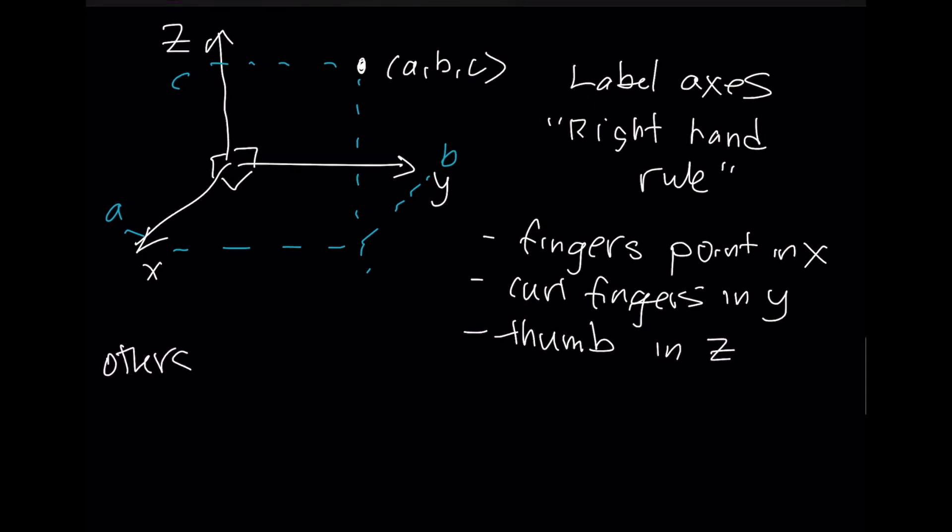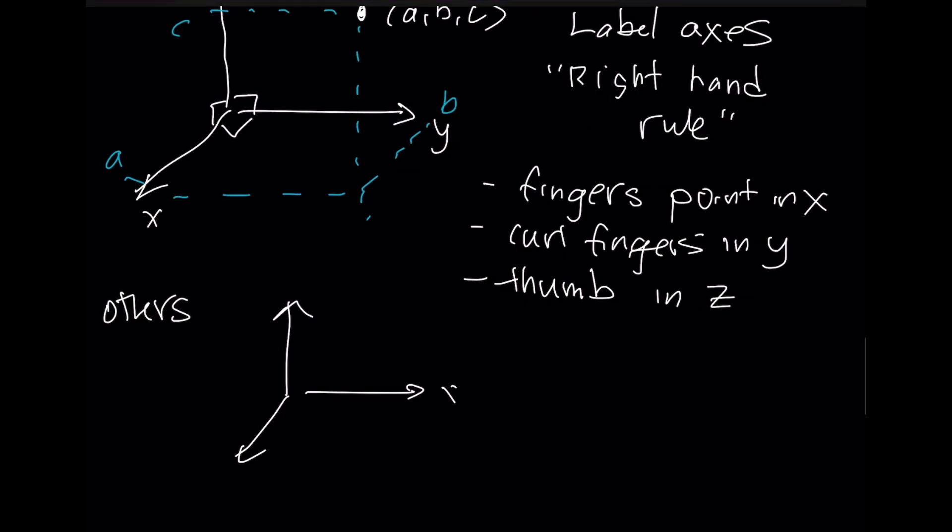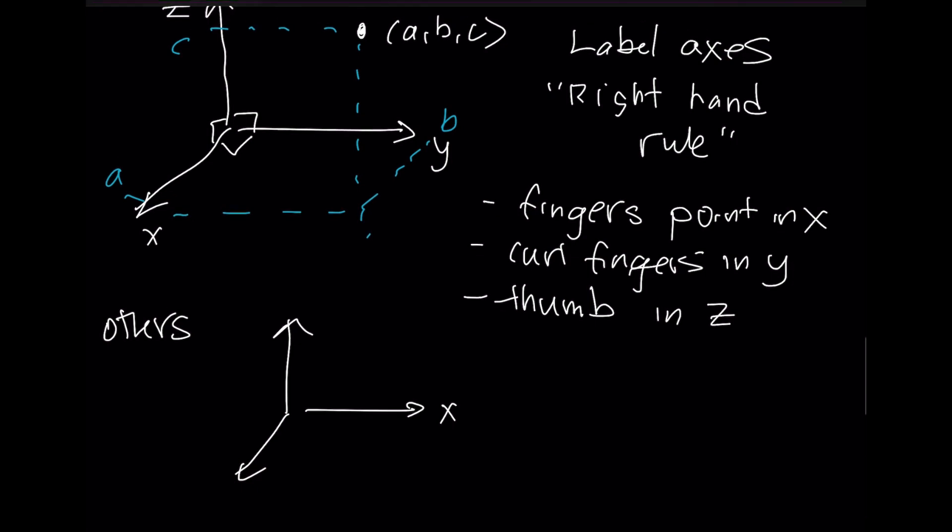Other options kind of work like this. If I were to take those same three axes, if I wanted to put x right here, that means I have to curl my fingers in the direction of y, so they'll have to point up there, and then my thumb would have to point as z, or the other option would be to say, hey, I want this to be the x-axis. That means I have to curl my fingers down toward here, and then z will point out accordingly.